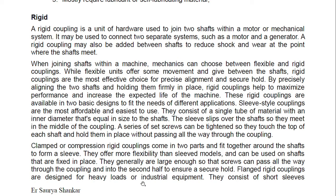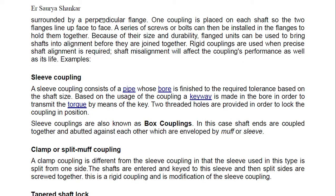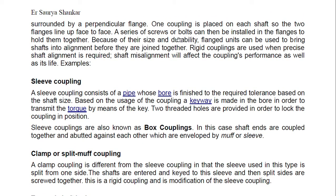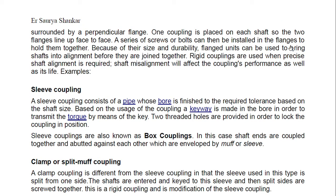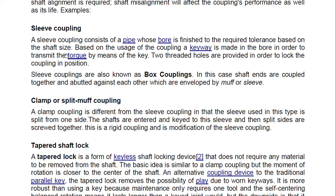Flange rigid couplings are designed for heavy loads or industrial equipment. They consist of short sleeves surrounded by a perpendicular flange — one coupling is placed on each shaft so the two flanges line up face to face. Screws or bolts are installed in the flanges to hold them together. Because of their size and durability, flange units can be used to bring shafts into alignment before joining. Rigid couplings are used when precise shaft alignment is required; shaft misalignment will affect the coupling's performance and life.